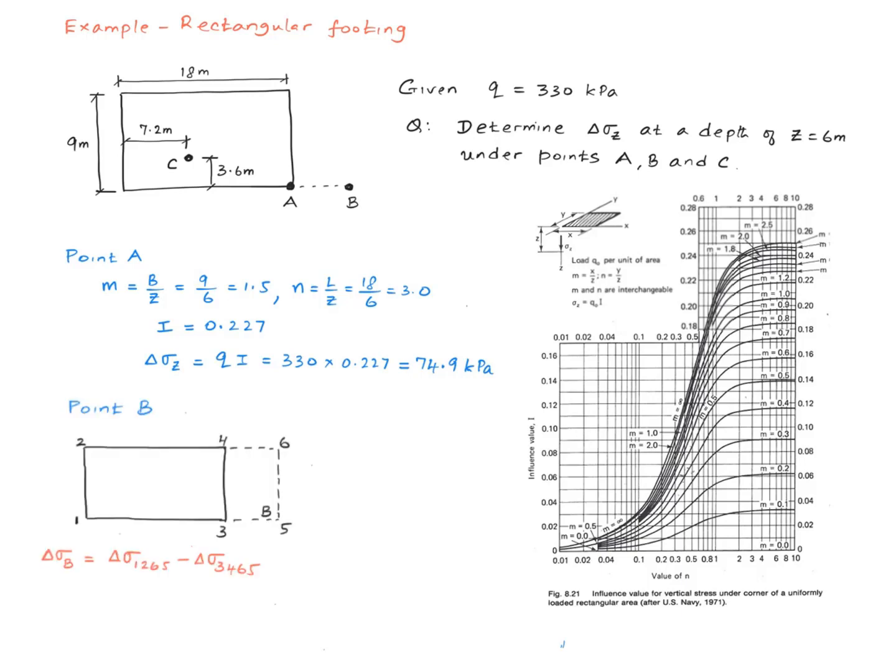Now let's consider point B, which is not one of the four corners. So what do we do? We use the principle of superposition.